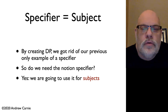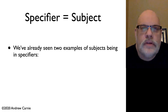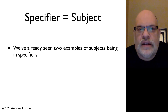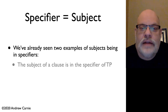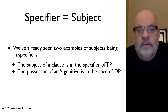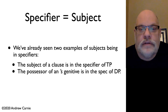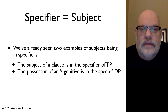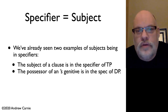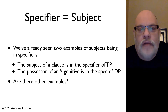When we have a DP with a genitive possessor, and when we have a TP with a subject in it, those are items where those subjects are in the specifiers of particular phrases. The subject of a clause is in the specifier of the TP; the possessive of an S-genitive is in the specifier of DP. So maybe we should extend this to all categories — what specifiers do is they serve the purpose of being subjects.